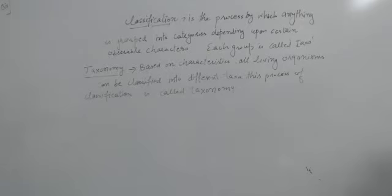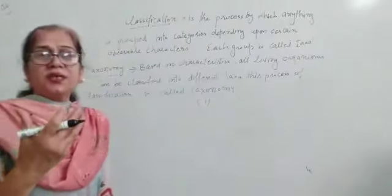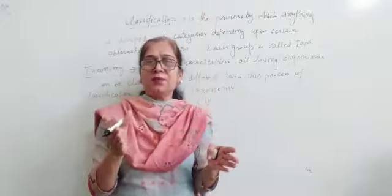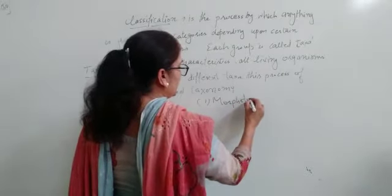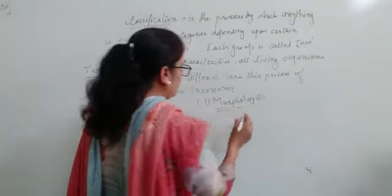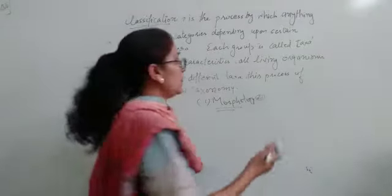Taxonomy of the organism is based upon certain knowledge. The grouping depends on some points. First point: external form and structure - how the organism looks from outside, what is its structure. This is called morphology. Then internal structure - if you cut and see, what is inside. That is anatomy.